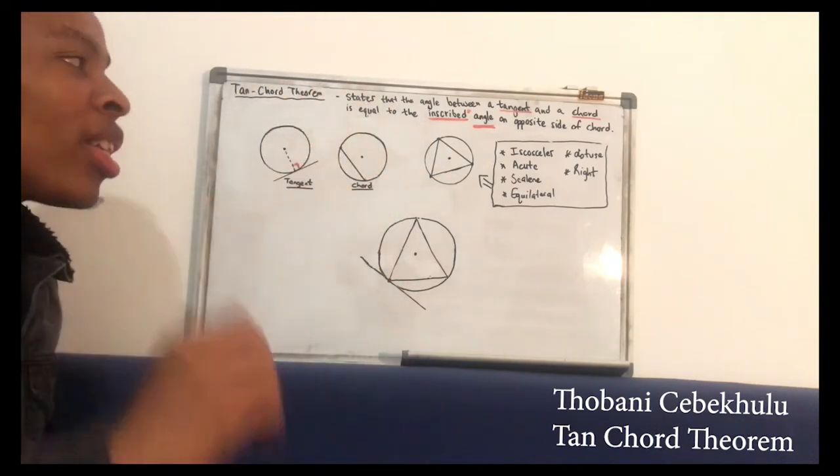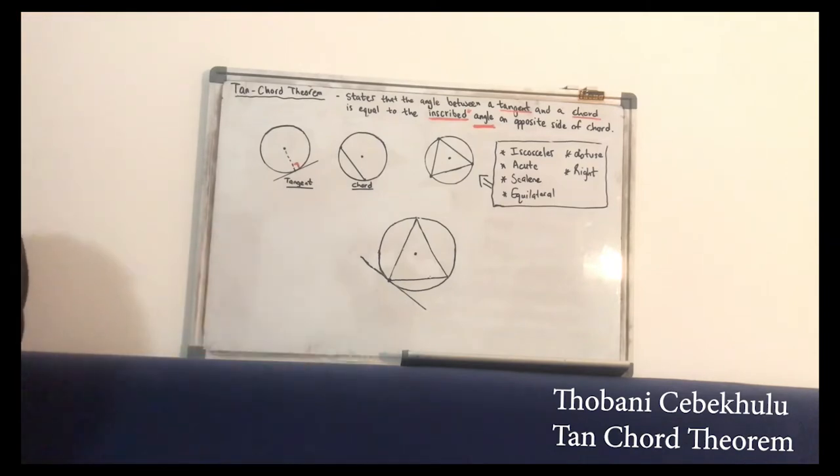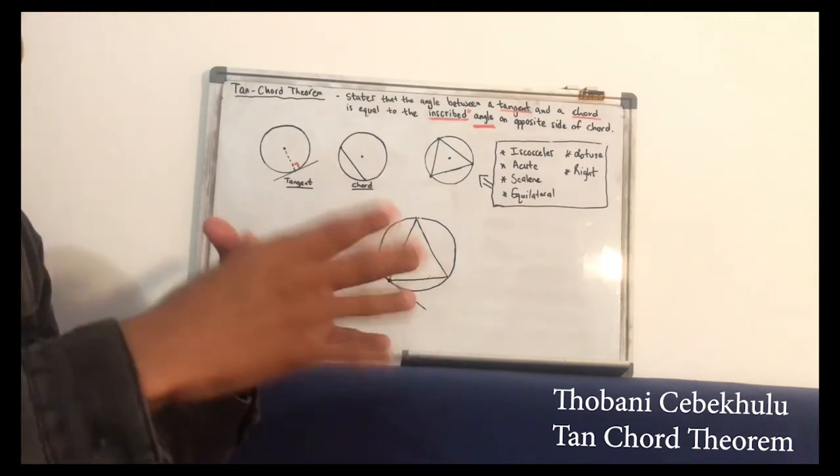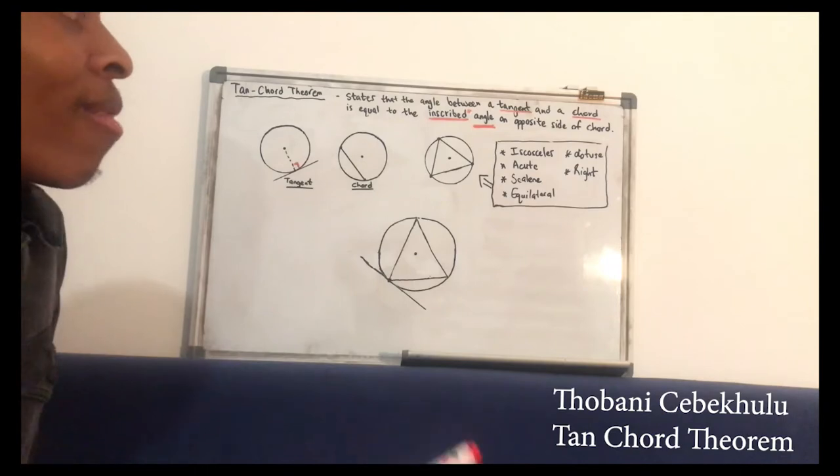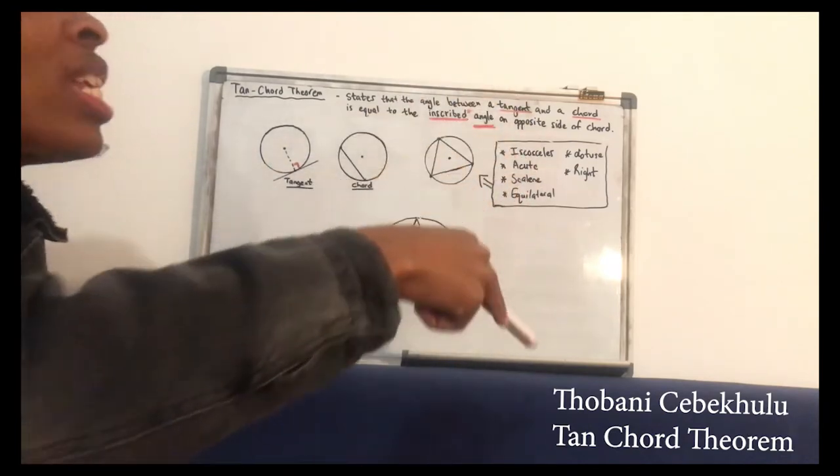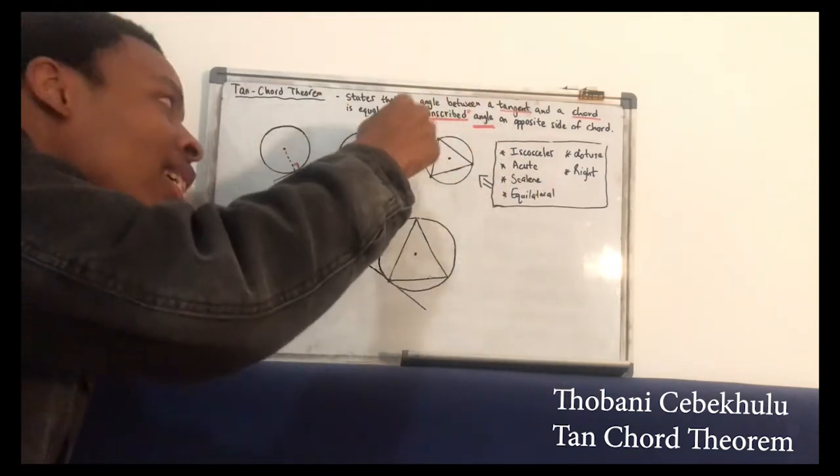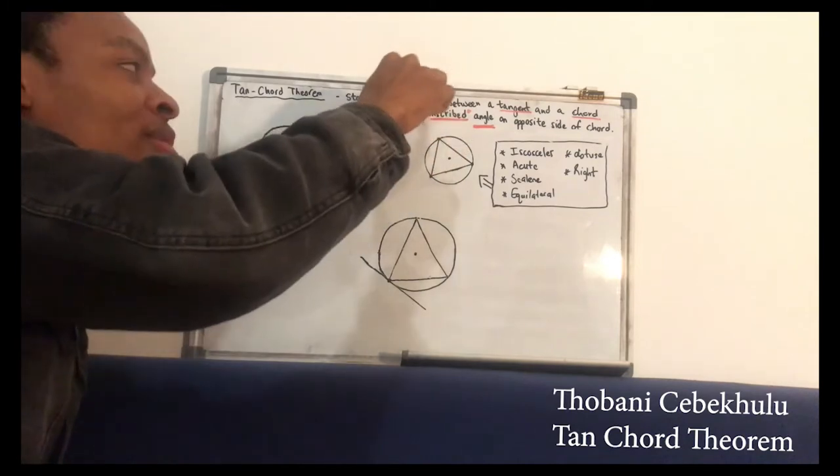Inscribed geometrically means a shape that has another shape that is well fitted inside. In this case we can have any type of triangle fit into a circle in order to have an inscribed shape.